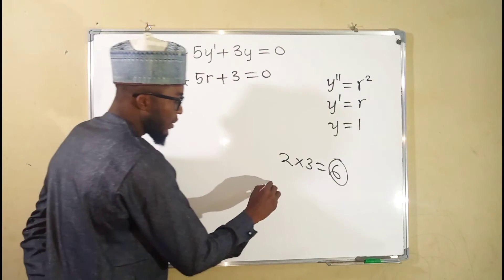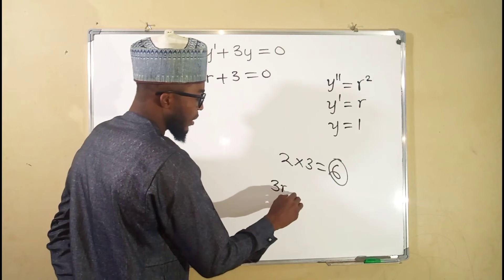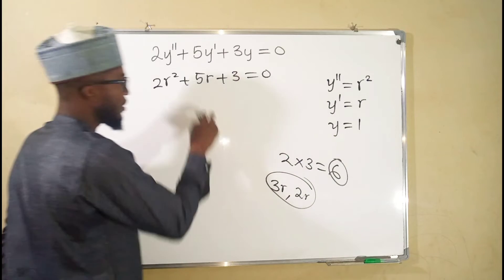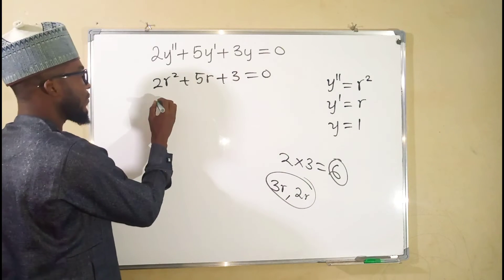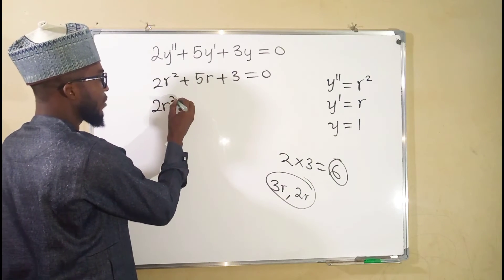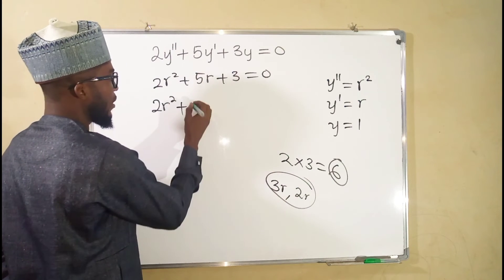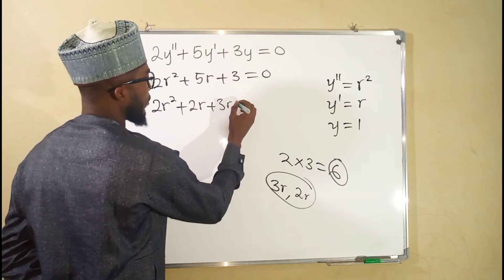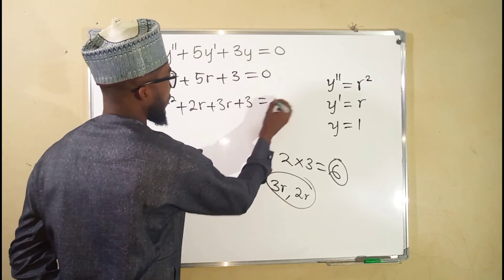So 3r and 2r are going to be substituted for 5r. So we have 2r to the second power, plus 2r, plus 3r, plus 3. This is equal to 0.